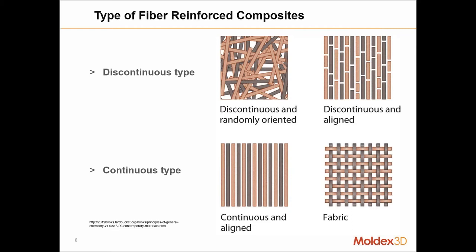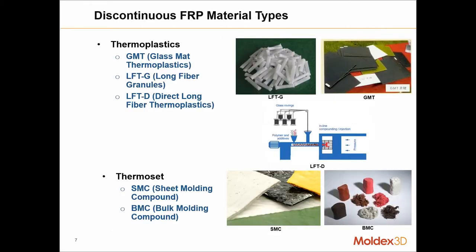For discontinuous types of composites we have randomly oriented fibers and discontinuous aligned fibers — fiber is an easy way to visualize this. For continuous type we have aligned fibers and fabrics, pre-preg materials. Some images show these different types: thermoplastics include GMT, LFT, and LFTD direct long fiber thermoplastics; thermosets include sheet molding compounds and bulk molding compounds.